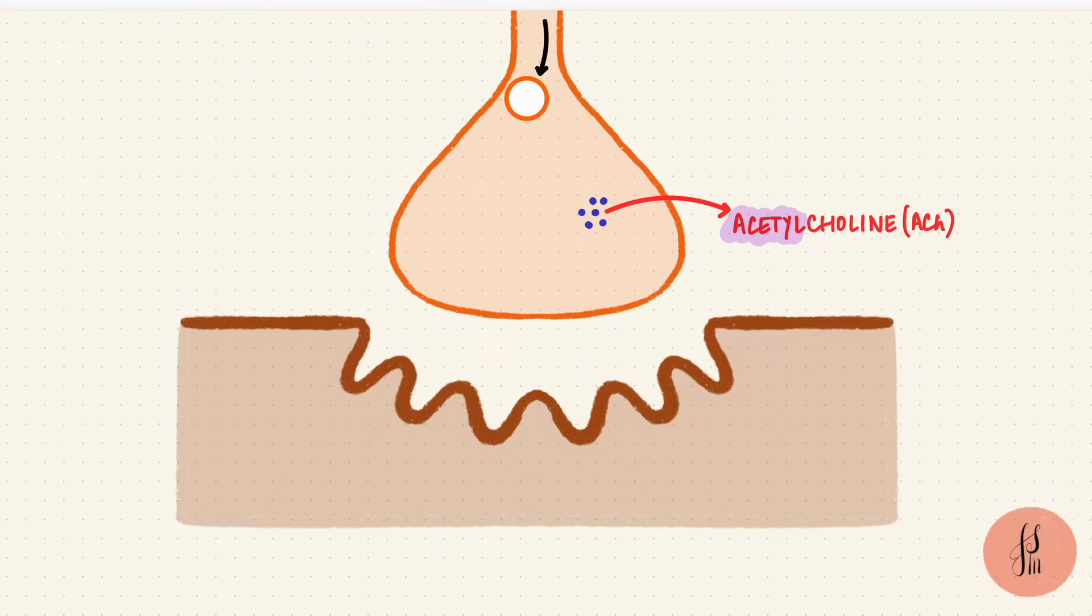Now how is acetylcholine synthesized? Again, look at the name. Acetylcoenzyme A plus choline. Flip it around for the enzyme that works here: choline acetyltransferase.